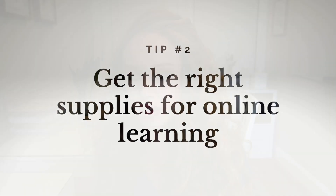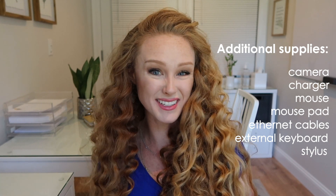Speaking of supplies, tip number two is to have the right supplies. Even if you're doing online or hybrid learning, you'll still need traditional school supplies — pens, highlighters, paper — but you'll also need a camera, charger, mouse, mouse pad, ethernet cables, and possibly an external keyboard and stylus if you're using a tablet. Online and hybrid learning actually comes with more supplies.